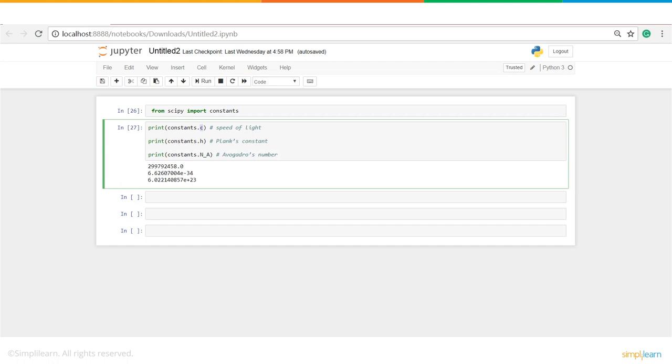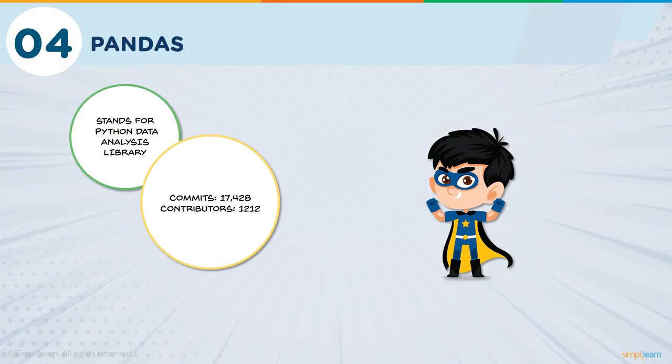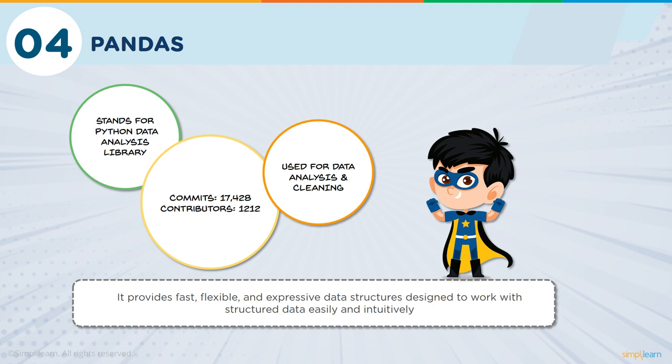Data analysis is an integral part of data science — data scientists spend most of the day in data munging and cleaning. Hence, mention of Pandas is a must in the data science lifecycle. Pandas is the most popular and widely used Python library for data science, along with NumPy and Matplotlib. The name stands for Python Data Analysis, with around 17,000 commits on GitHub and an active community of 1,200 contributors. It is heavily used for data analysis and cleaning, providing fast, flexible data structures like DataFrames and Series, designed to work with structured data very easily and intuitively.